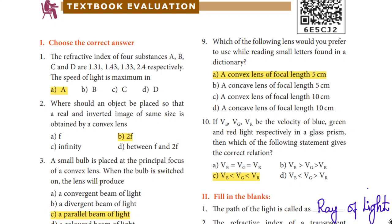First question: The refractive index of four different substances is given. In this question we need to calculate where speed of light is maximum. Speed of light is maximum when refractive index is minimum. So refractive index mu is minimum, that means speed of light is maximum.